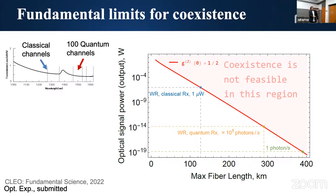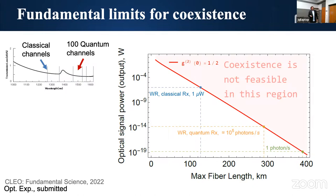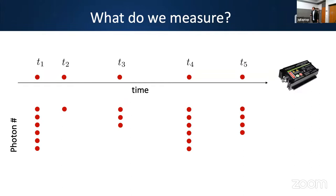At the level of a single photon per second, extending communication length by another 100 km is barely feasible. The dominant noise mechanism is Raman activity from classical channels, occurring in both forward and backward directions. Because the group velocities differ, even pulsing doesn't help much because the pulses quickly become a continuous background. A model behind this will be published soon in Optics Express.